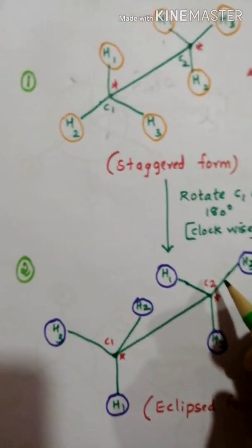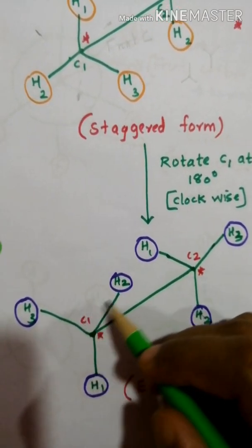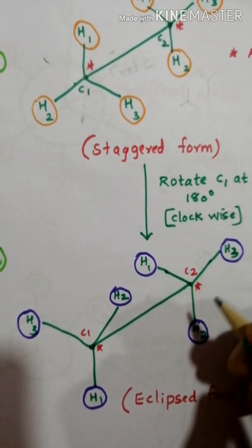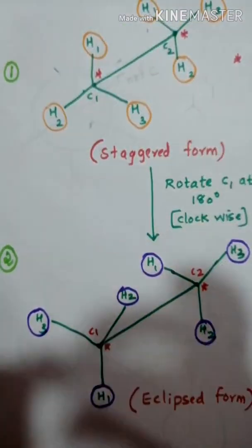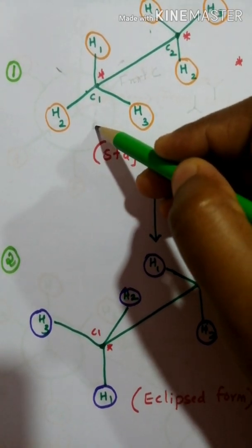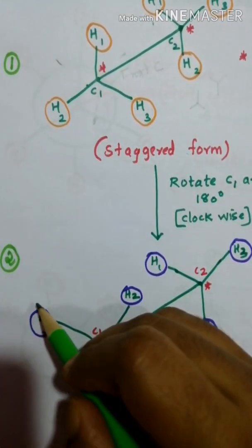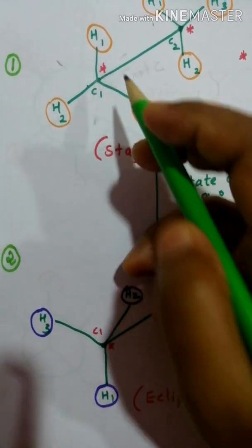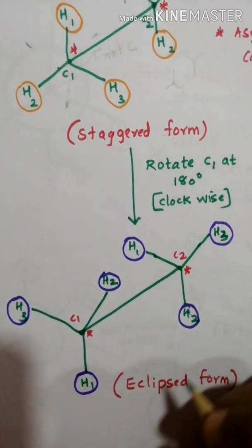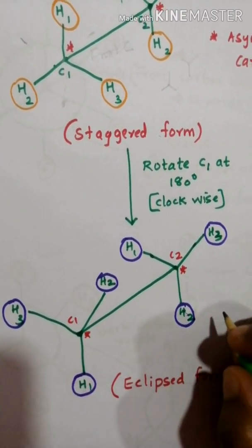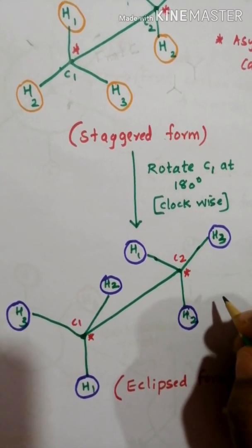Then look at the result we get. We get a compound like this - there is no change here. The only changes: H1 comes to this position, H3 is here, and H2 is here. So this is called eclipsed form of Sawhorse.